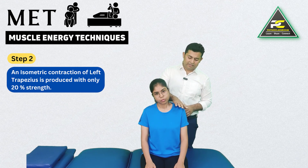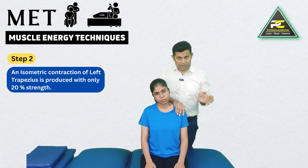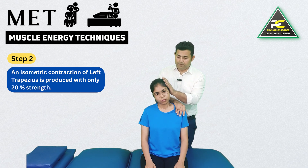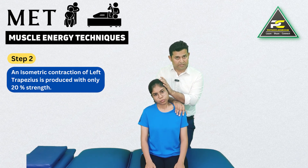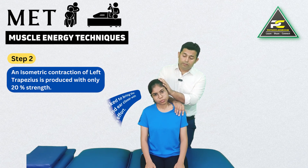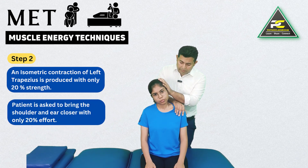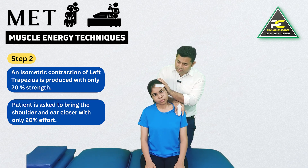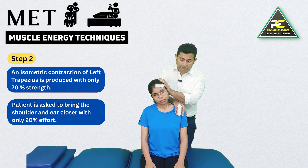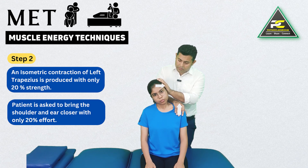The therapist stabilizes the patient's left shoulder and places the other hand over the lateral aspect of the patient's head. The patient is then asked: 'With 20% of your effort, try to bring the left shoulder toward your left ear and the left ear toward your left shoulder — but do not win against my resistance, just try with 20% effort.'